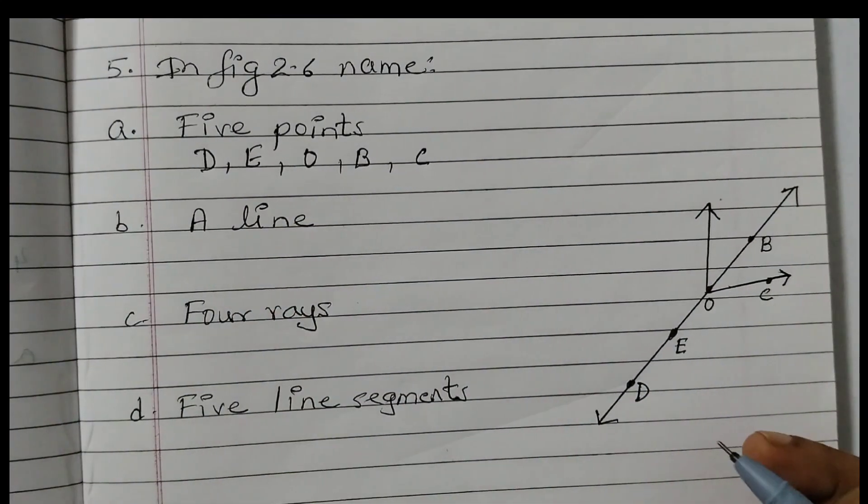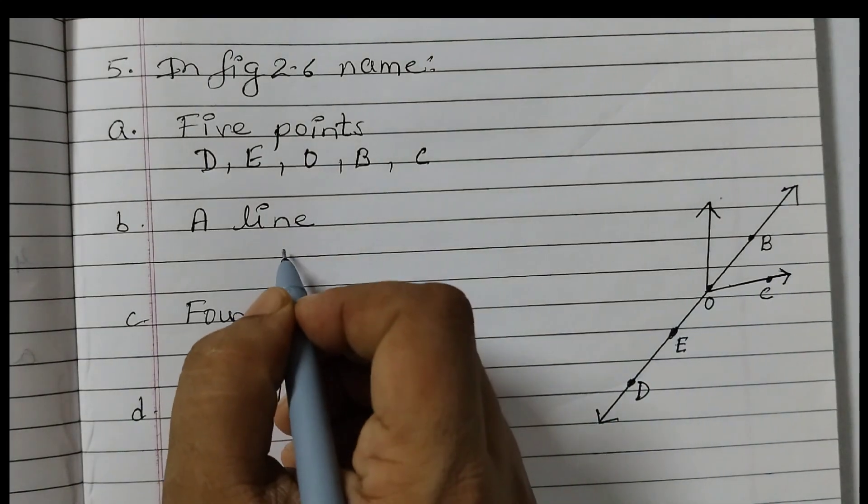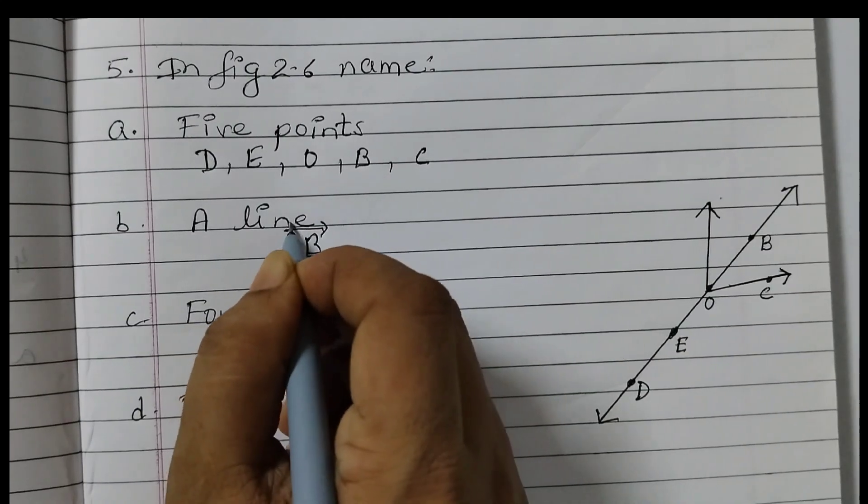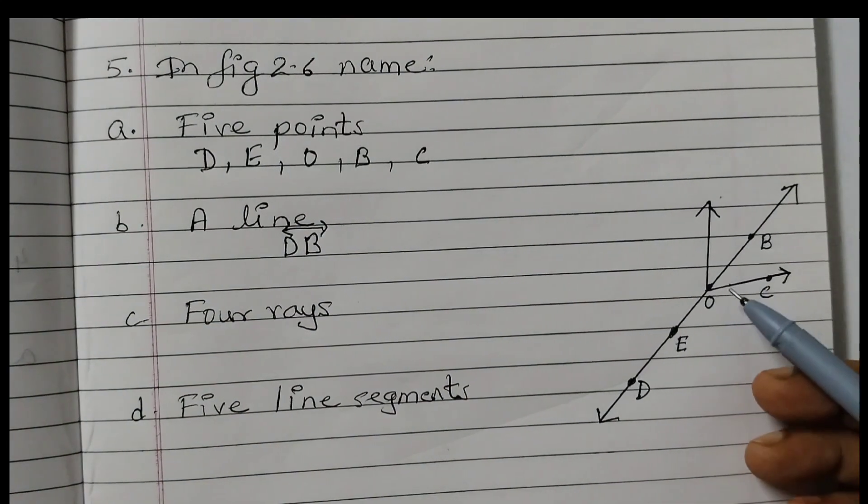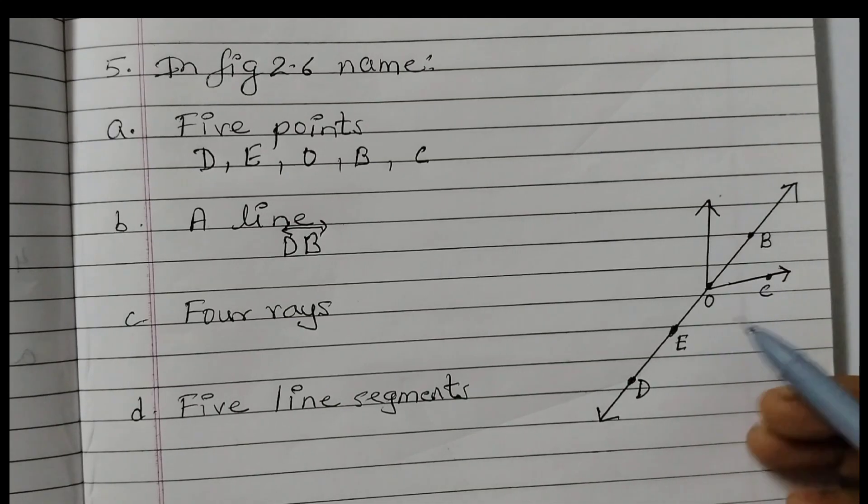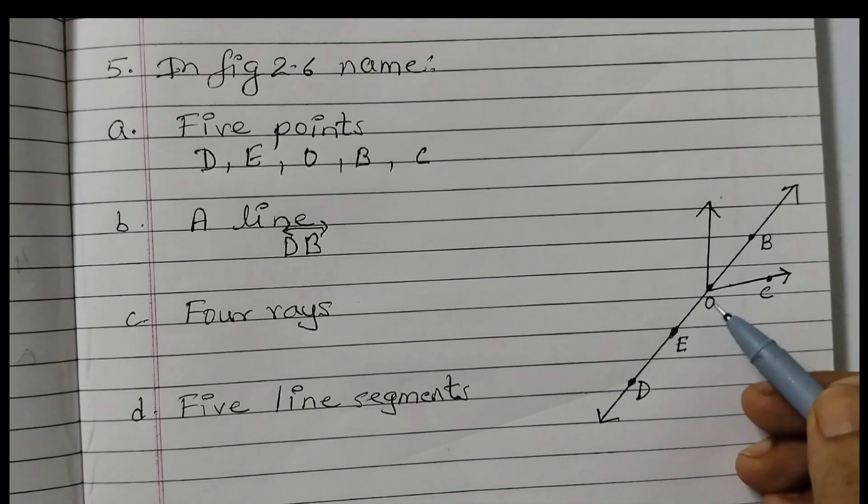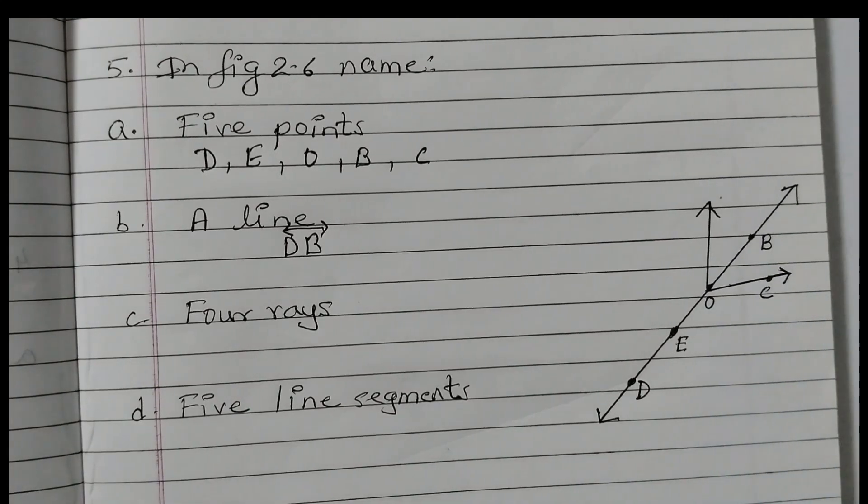A line. So we can take point D and B. So we can say DB and put a line on top of this. A small one. You can take any two points on this line and you can name it. It is not necessary that you take only D, B. You can take line DE, OB, EB, DB. Anything is fine.